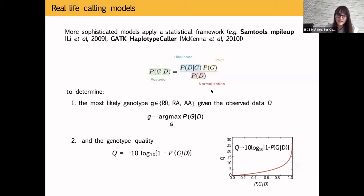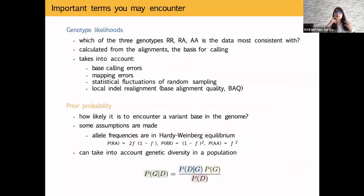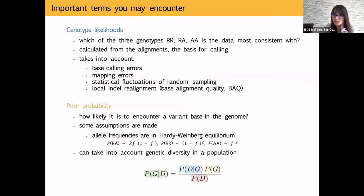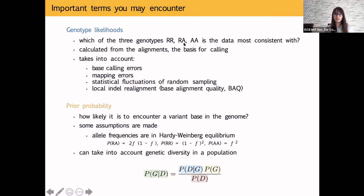The genotype likelihood (shown in blue in the formula) is the probability of obtaining the sequencing reads you see in your alignment given a particular genotype. It is calculated from the quality scores associated with each read at that site, multiplied across all reads. It's important to consider which program you apply — some assume only three possible genotypes, which is not appropriate for cancer data where ploidy assumptions don't hold.